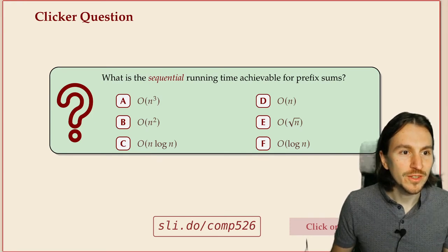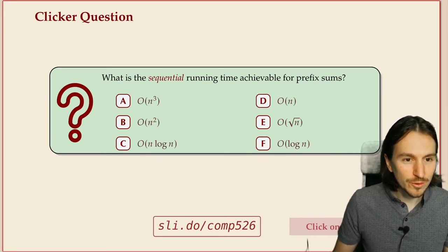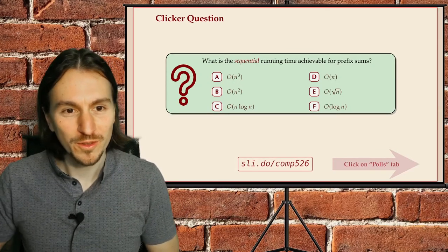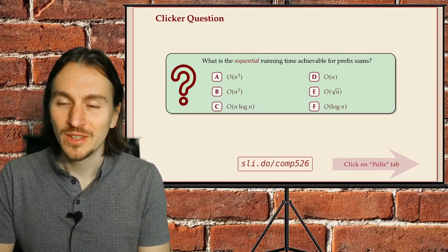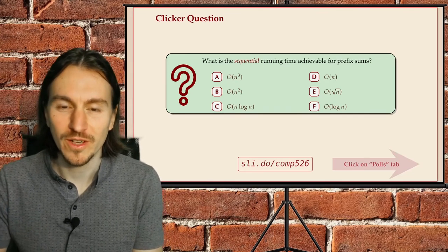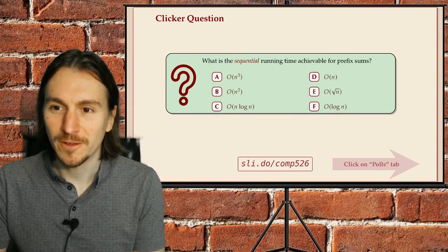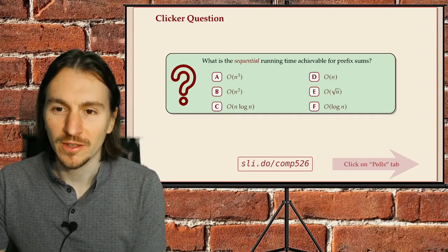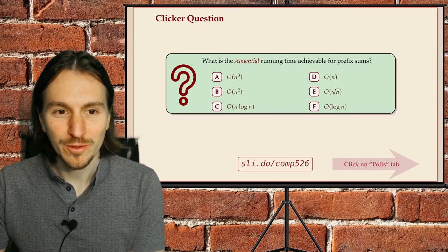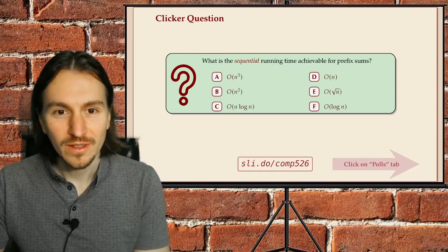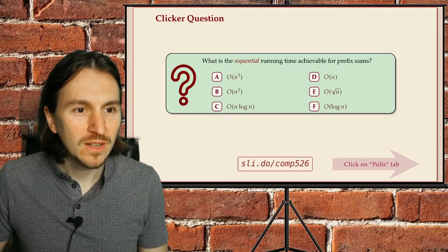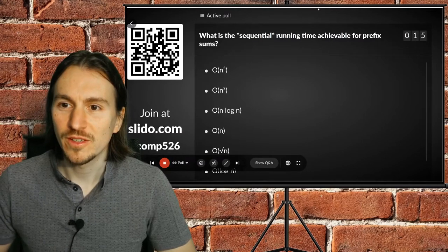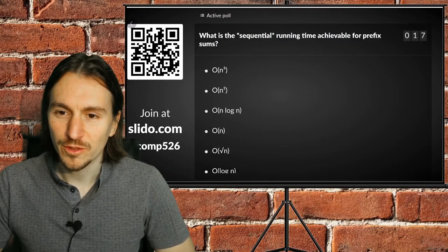If you feel you understand this, let's see first how this would look sequentially. We have this problem of computing prefix sums; we can do this with a sequential algorithm. We're allowed to do this in place, which makes life a lot easier. What is the sequential time you can achieve for computing all these prefix sums of all the prefixes? I'll give you a little bit of time to think about it — try to do it as efficiently as possible.